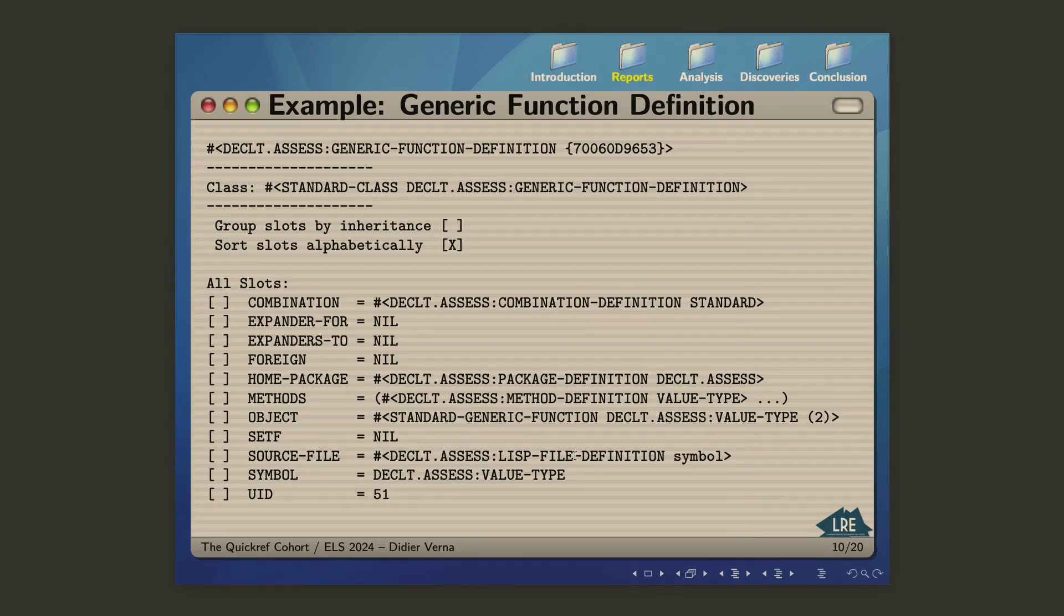Let's just look at an example. This is a DECLET definition for a generic function. As you can see, you have the reference to the method combination. There is no associated set-eff expander for this generic function. It's not foreign, meaning it's defined in the system in question. There is a home package. There is a list of methods in that generic function. The object slot here is the original Lisp object which is currently represented by that definition. And for us, the important thing here is to notice that every time I have a cross-reference to something, it's not a cross-reference to the original Lisp object, but to the DECLET definition for that object. So I don't have a list of references to methods. I have a list of references to definitions for the methods belonging to that generic function.